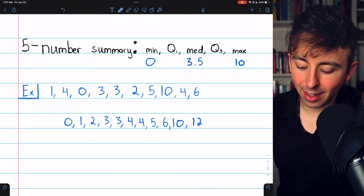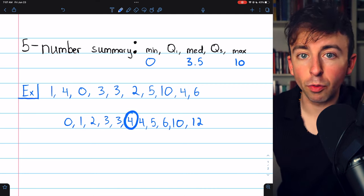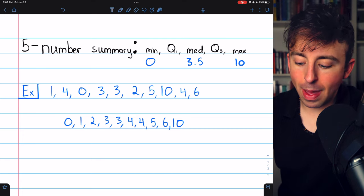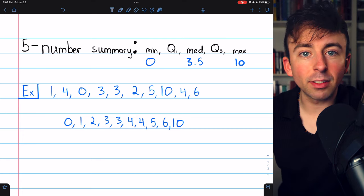If we had one more number in this data set, the median would just be the number in the middle. In this case, that would have been 4. So we found the minimum, the maximum, and we just found the median is 3.5.